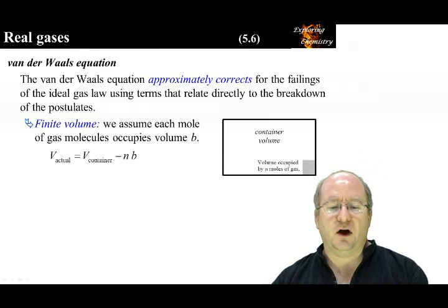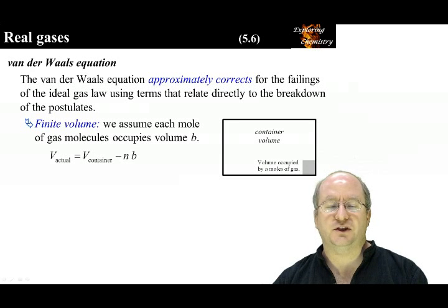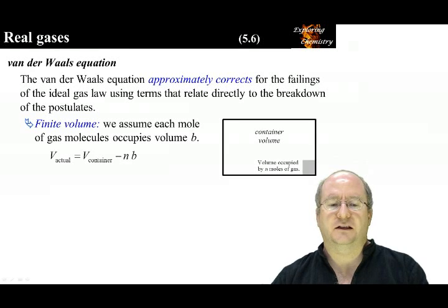To correct for the finite volume, we assume that each mole of gas occupies a volume B. B is dependent on the gas. Thus, as shown in the equation, the actual volume is less than the stated volume of the container.